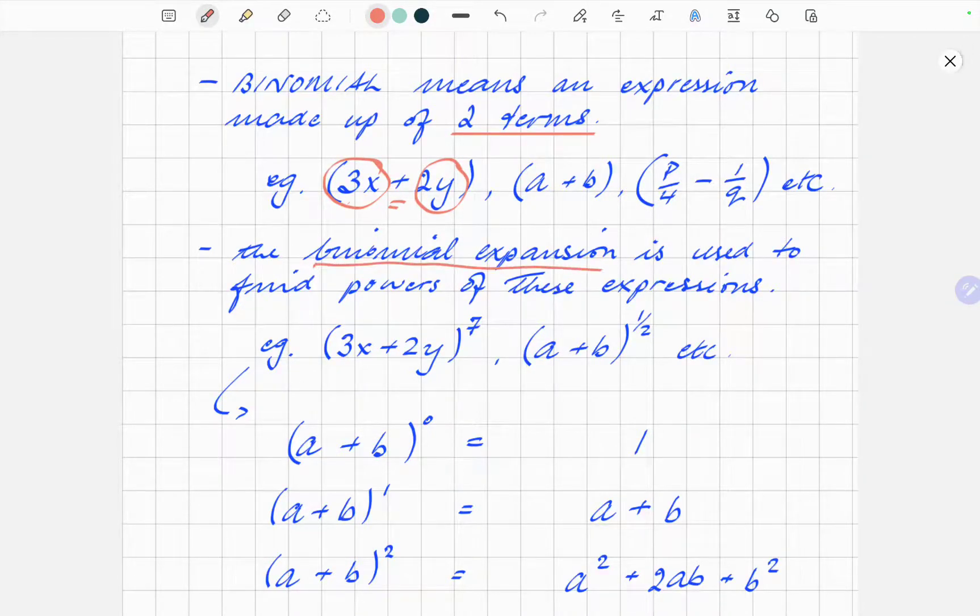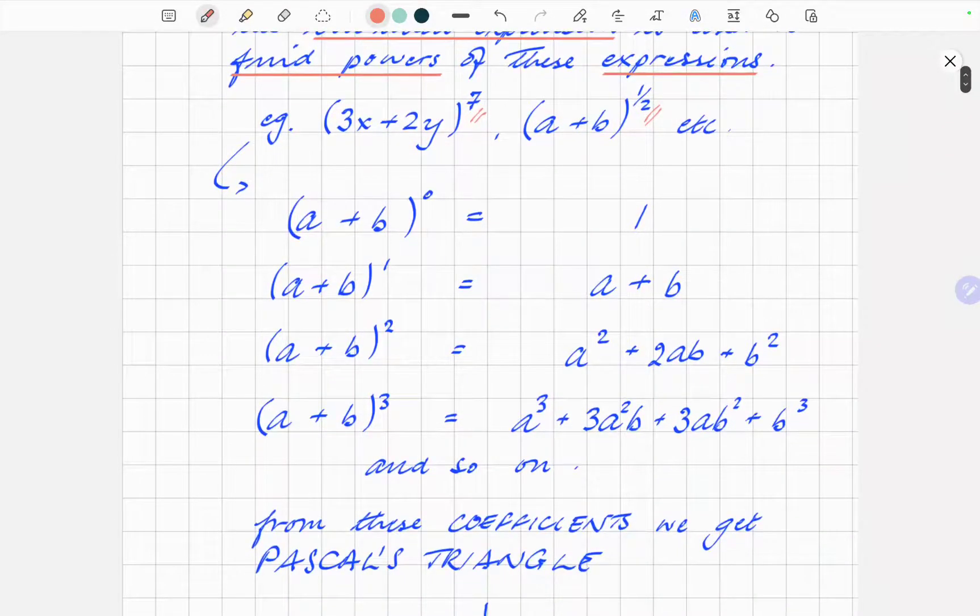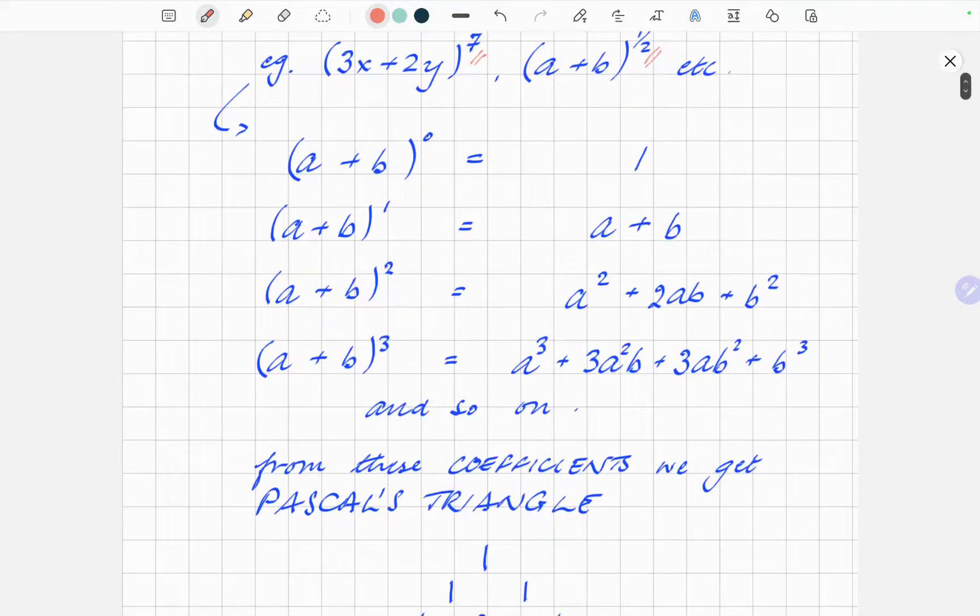The binomial expansion is used to find powers of these expressions. For example, (3x + 2y) to the power 7, or (a + b) to the power half even. It doesn't have to be whole integer powers, it can be any power. I'm going to run through this as quickly as possible, get to the bit that you really need for the exams and concentrate on that.